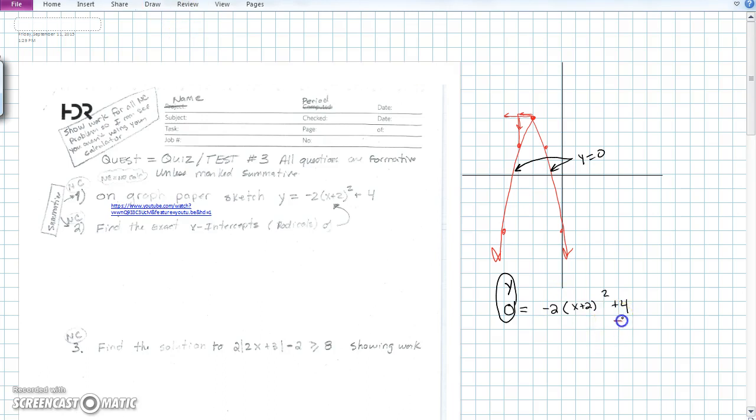The first thing I'll do is subtract 4, and we have negative 4 equals negative 2 times x plus 2 quantity squared.